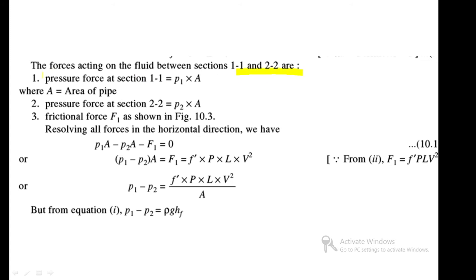The forces acting on the fluid between sections 1-1 and 2-2 are: pressure force at section 1-1 is P1·A (in the forward direction, positive), pressure force at section 2-2 is P2·A (opposite direction, negative), and the frictional resistance F1 is also in the opposite direction (negative). Therefore: P1·A − P2·A − F1 = 0, giving (P1 − P2)·A = F1.